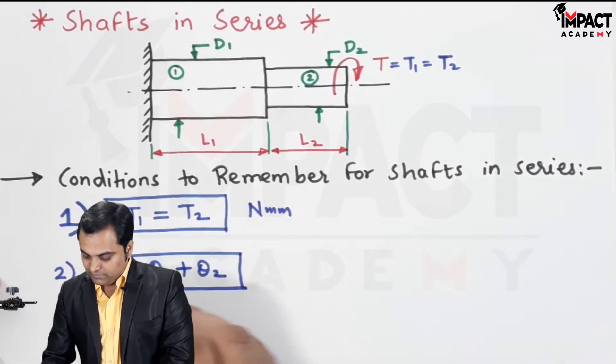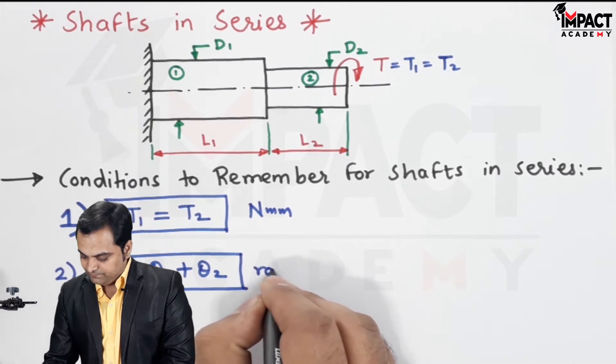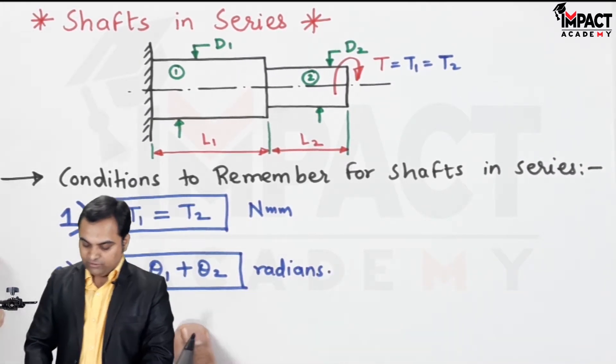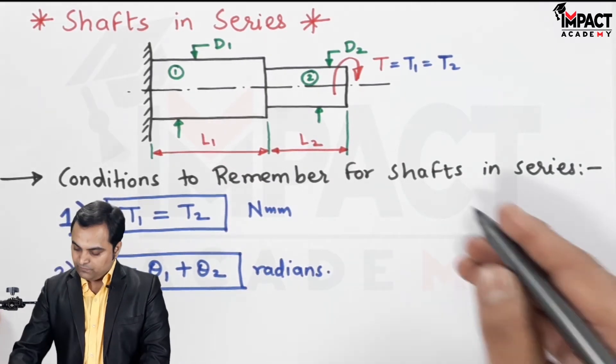The unit of torque is newton-mm and for angle of twist it is radians. And this angle of twist can be obtained from the torsional equation for rigidity criteria.